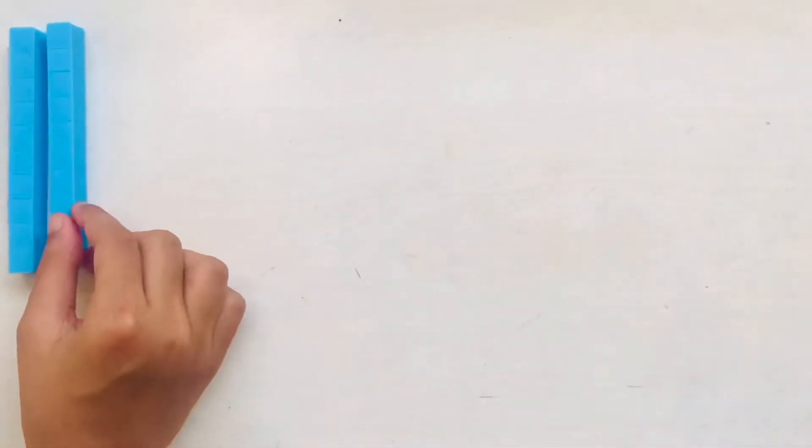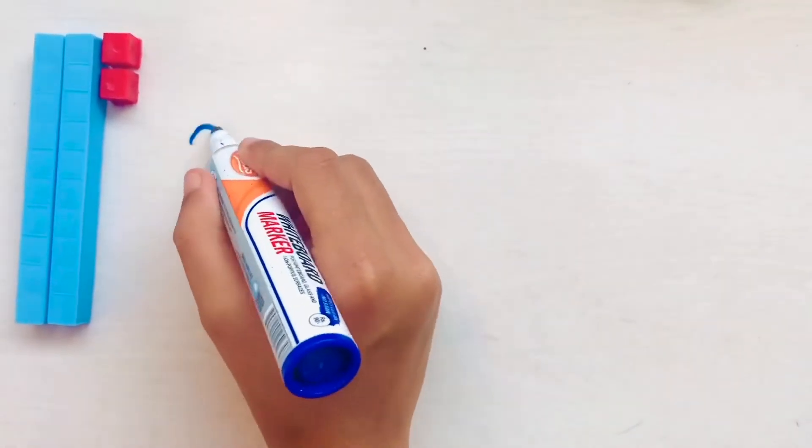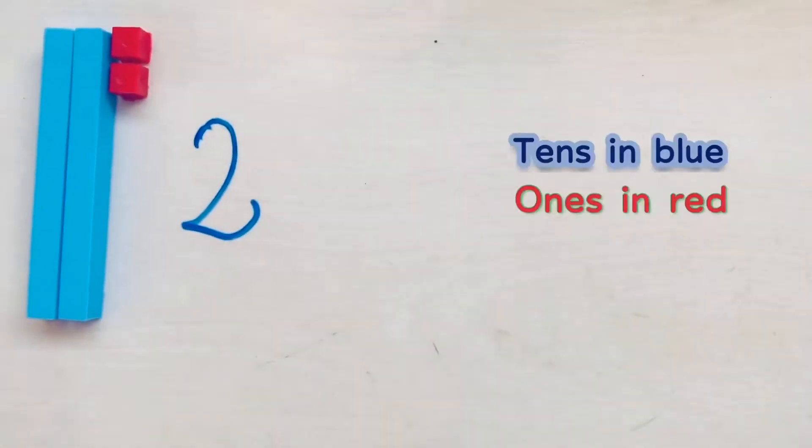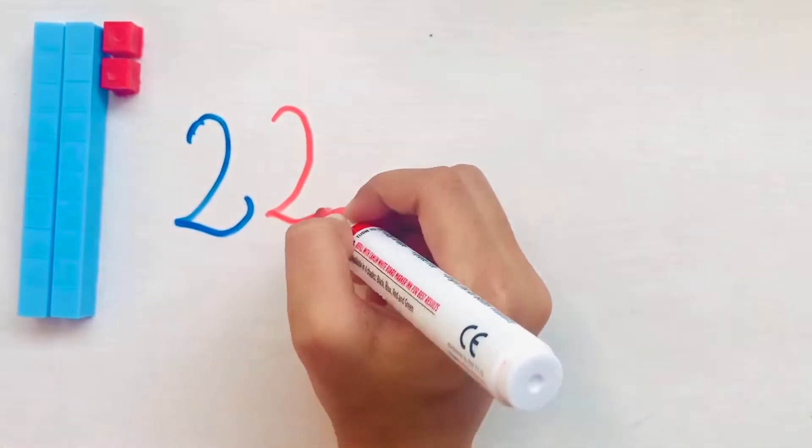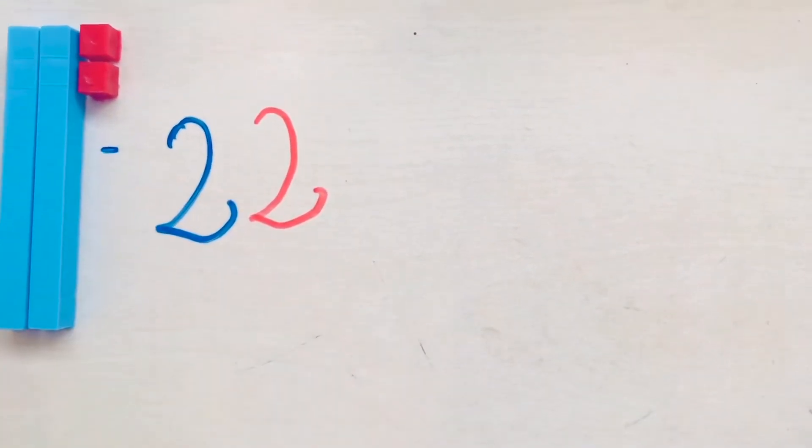Now we are going to combine different tens bars and units to make quantities. 2 ten bars and 2 units make 22.